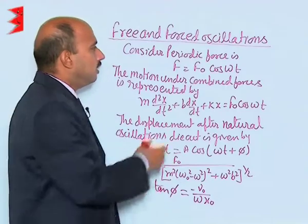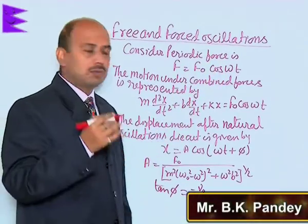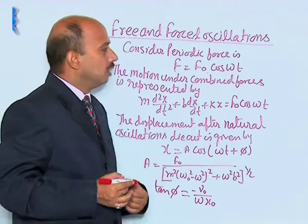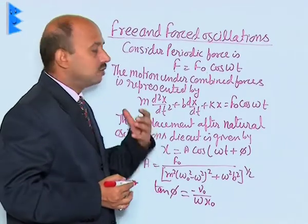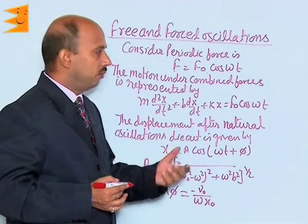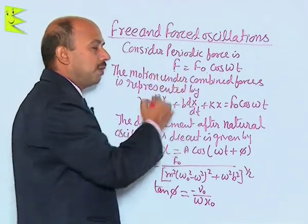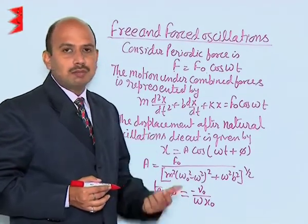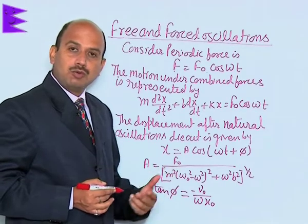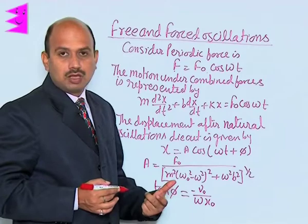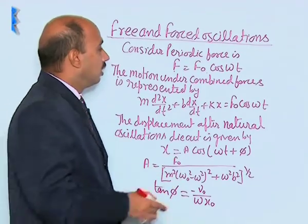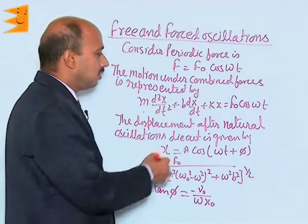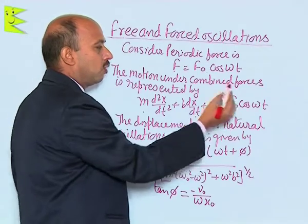Consider a periodic force applied on the body given by the equation F = F₀ cos(ωt), where ω is the frequency due to the driving force or external periodic force. When this force is applied, two forces are already acting on the body: one is the restoring force and one is the damping force. So there are three forces — restoring force, damping force, and external periodic force. Due to the combination of all these forces, the motion is represented as: m·d²x/dt² + b·dx/dt + kx = F₀ cos(ωt).